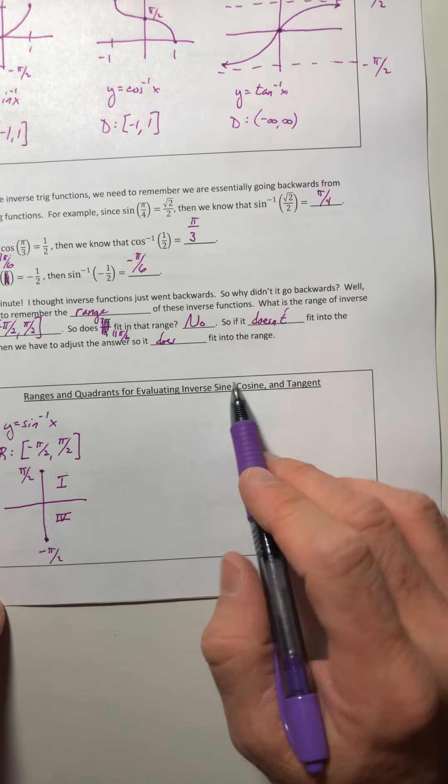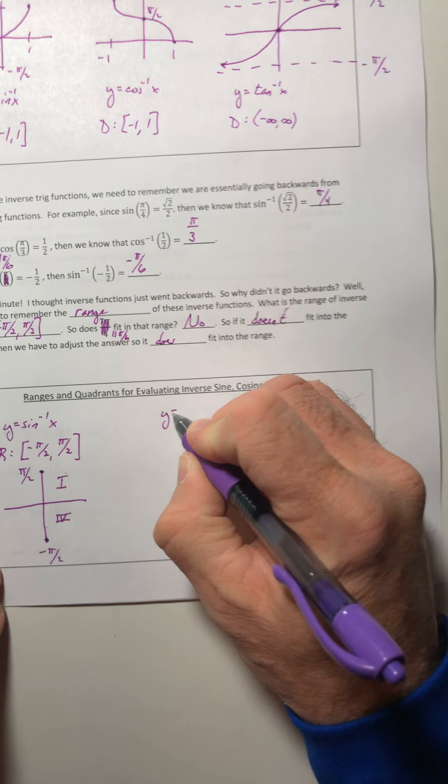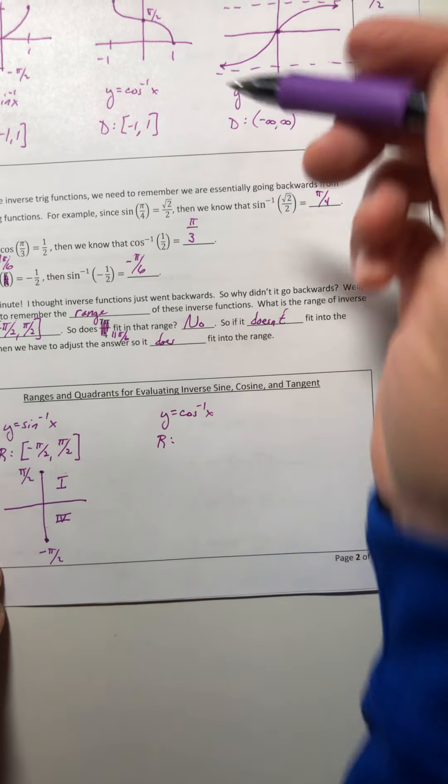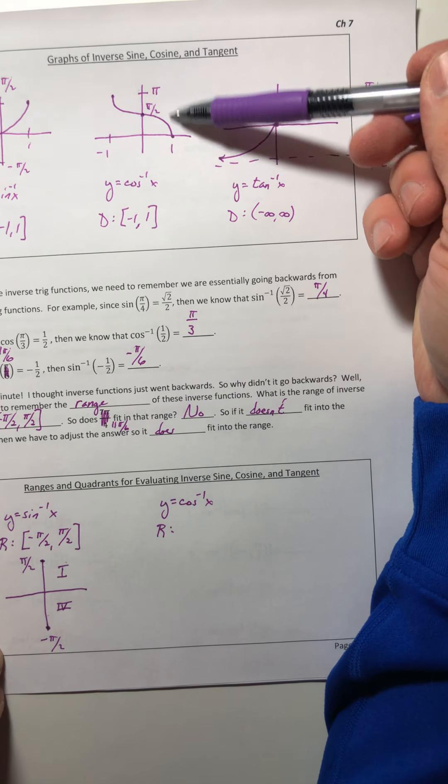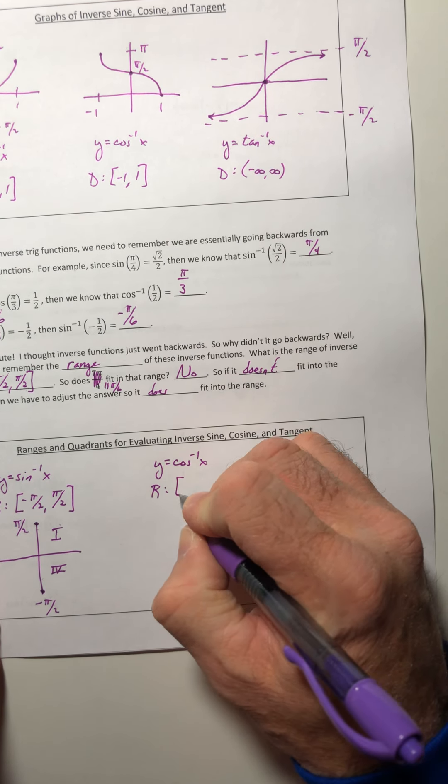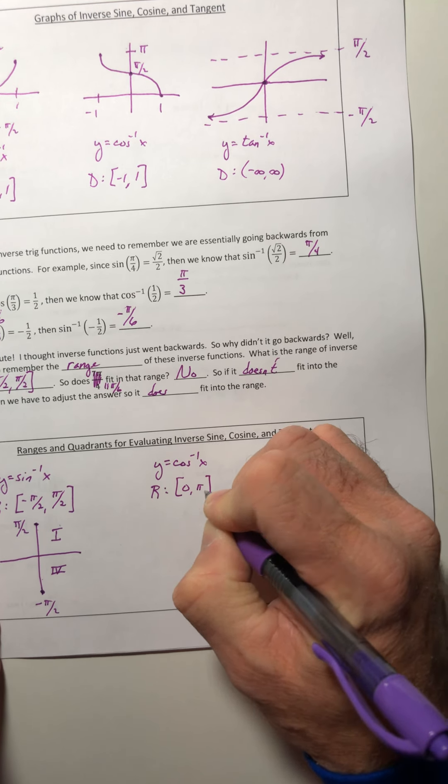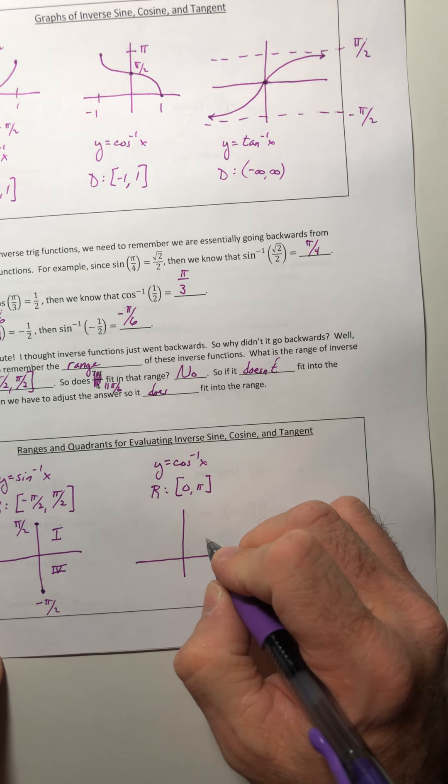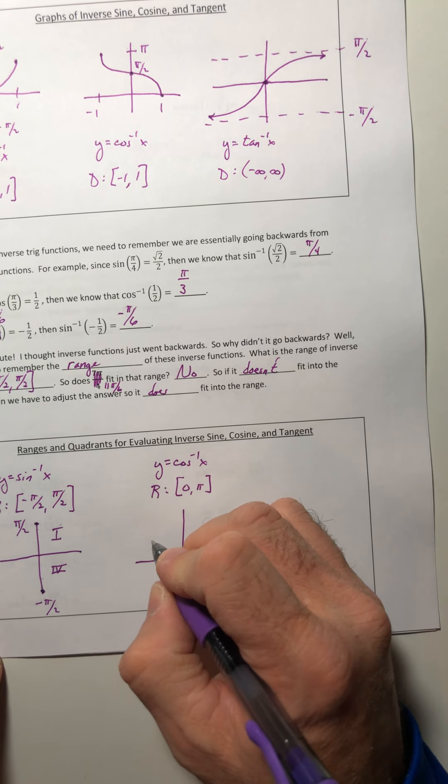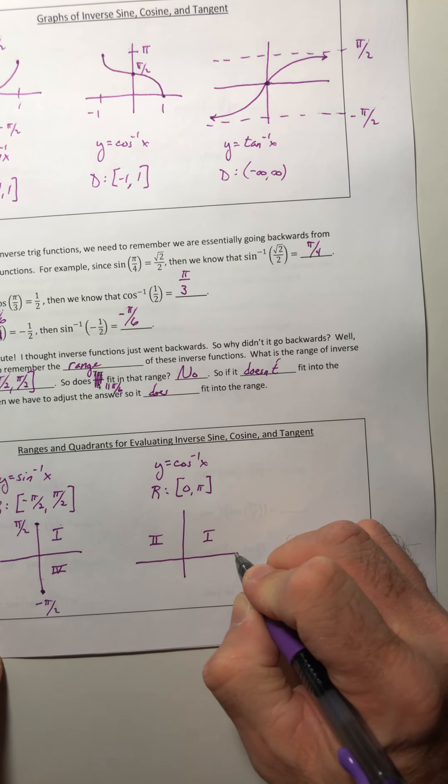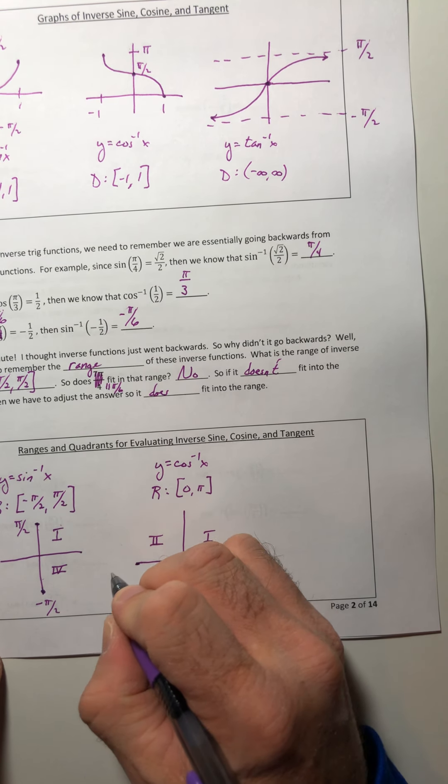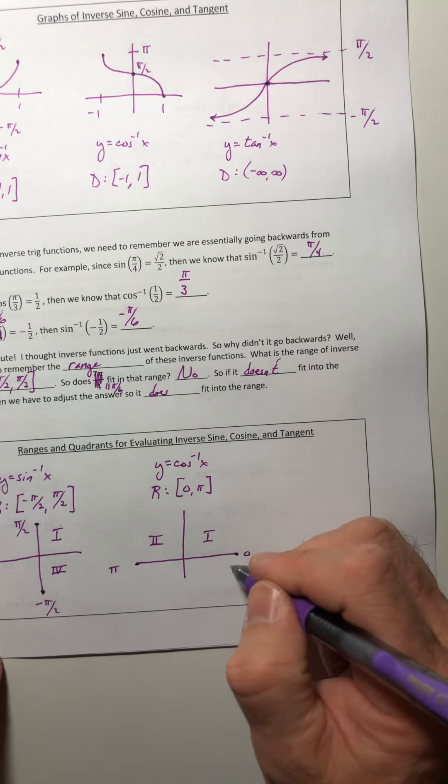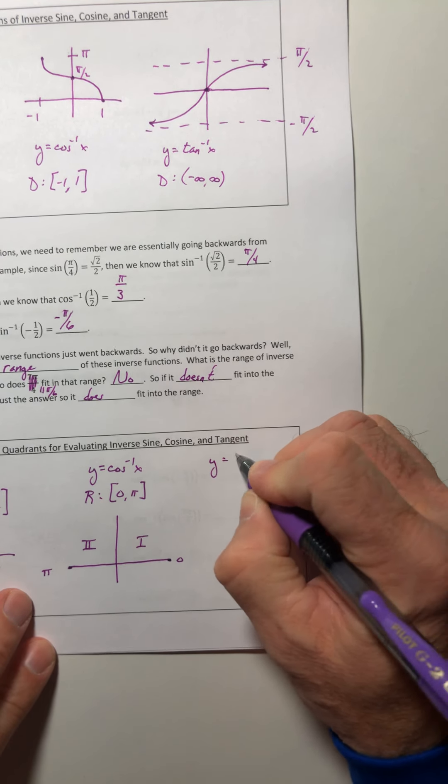So let's get the other ones up there: inverse cosine and inverse tangent. So inverse cosine, if you look at the y values up here, the range would be zero to π. So on the unit circle, that would have to fall into quadrants one and two, because zero would be all the way out here and π would be straight out on the left. So you're just rotating from quadrants one to two.